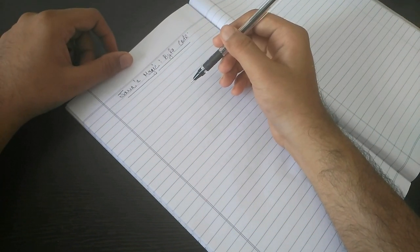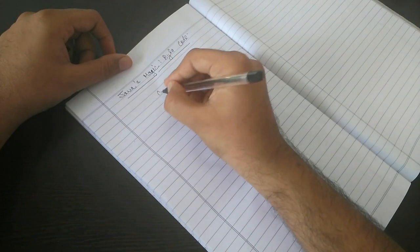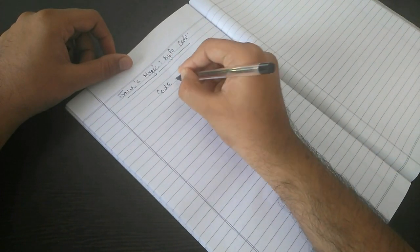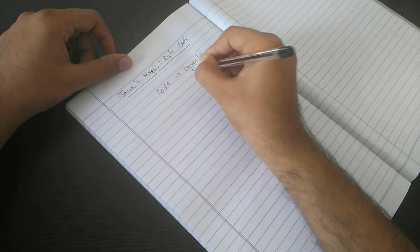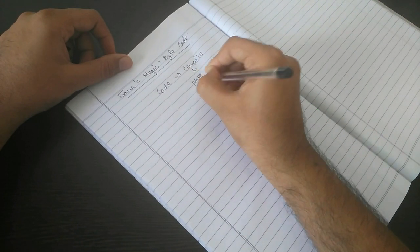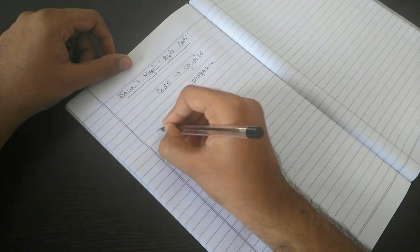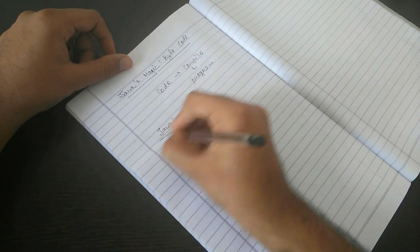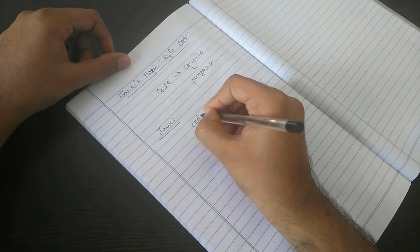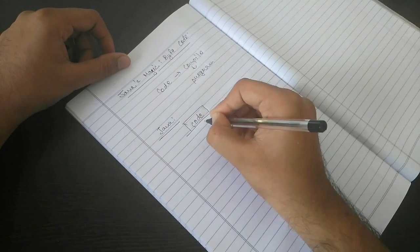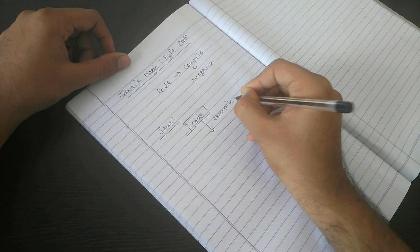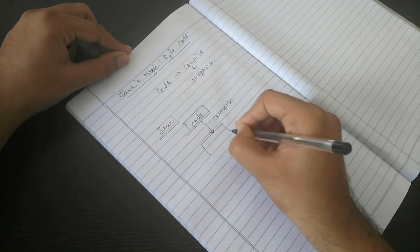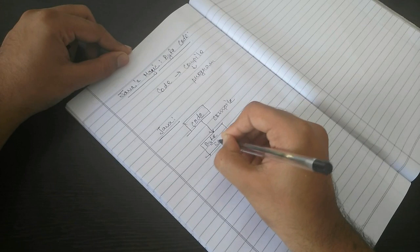In another language, when we write code and compile it, it gets converted into a program. But in Java, when you write code and compile it, it becomes bytecode.